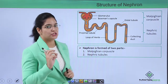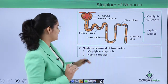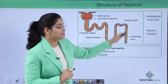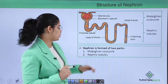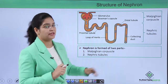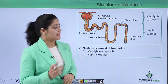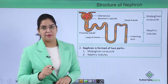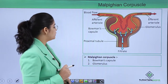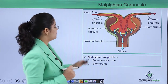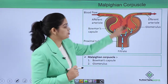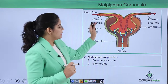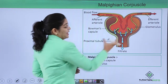Let's learn about each one of them. First, let's talk about the Malpighian capsule. As you can see here, it is like a sieve bowl in which a tuft of capillaries is present.